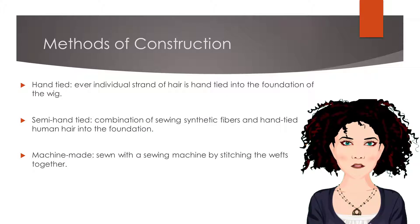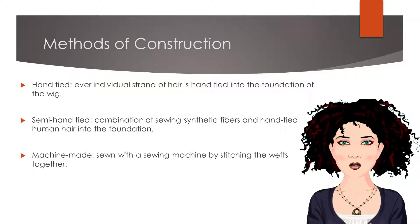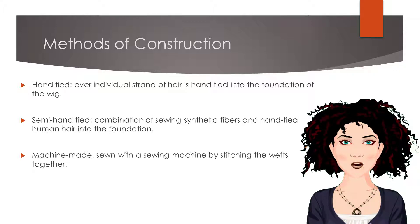Capless wigs are constructed in one of three methods. The first method is known as hand tied. Hand tied means that every individual strand of hair is hand tied into the foundation of the wig. A wig of hand tied construction will generally cost considerably more than other wigs.